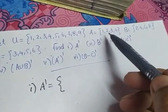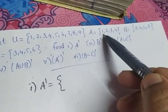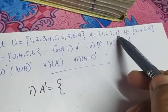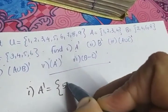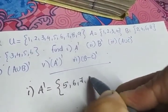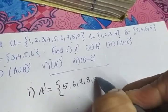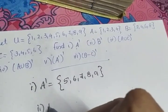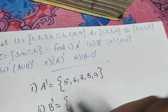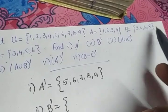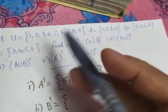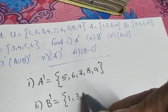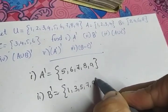Strike off 1, 2, 3, 4 from U; the balance will be {5,6,7,8,9}. For the second part, we have to find B dash. B contains {2,4,6,8}, so the balance element from U is {1,3,5,7,9}.